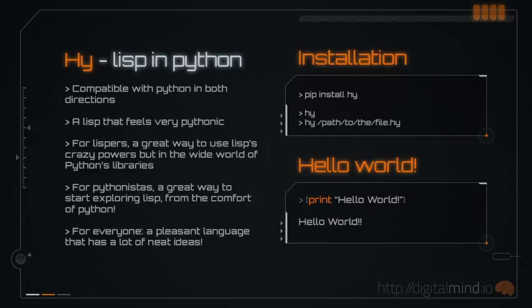Because Hi is seamlessly compatible with Python in both directions, you can use all the powers of Python libraries with the elegance and features of Lisp, even macros. And you can use Hi in your Python projects. You can even use it with Django to create websites and applications. If you are a Lisper, you will enjoy using the great powers of Lisp in the wide world of Python's libraries.